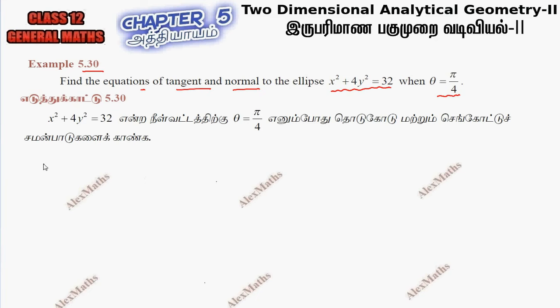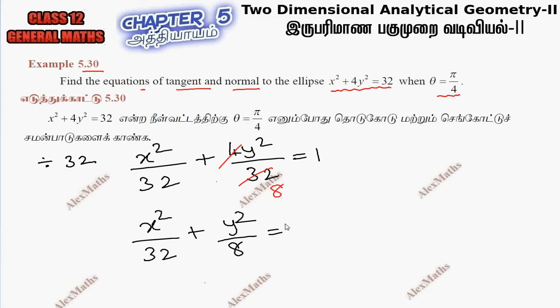The ellipse in standard form. So divided by 32: x²/32 + 4y²/32 = 1. Now 4 and 32 cut to form 8. So x²/32 + y²/8 = 1.